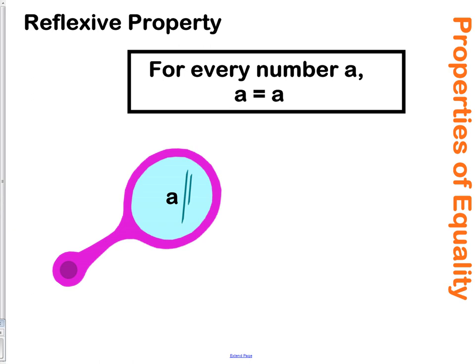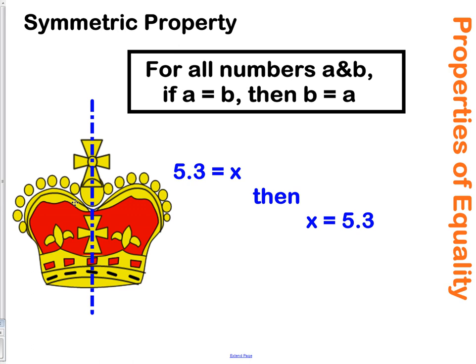I'm going to go fairly quickly through these, so if you need to, pause at any time so that you can have them in your notes. The reflexive property tells us everything is equal to itself — for every number A, A will always equal A. The symmetric property says, for all numbers A and B, if A equals B, then B must equal A.